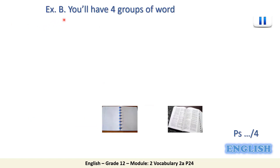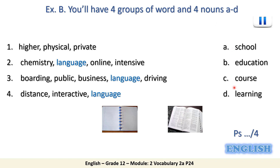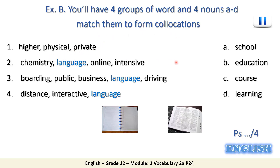Now, are you ready with exercise B? In this exercise, you will have four groups of words and four nouns from A to D. You are going to match them to form collocations. For example: higher, physical, or private — higher education, higher course, etc. Please pause, take your time, and match the nouns with the groups of words to form collocations. Don't forget your points and use a dictionary.